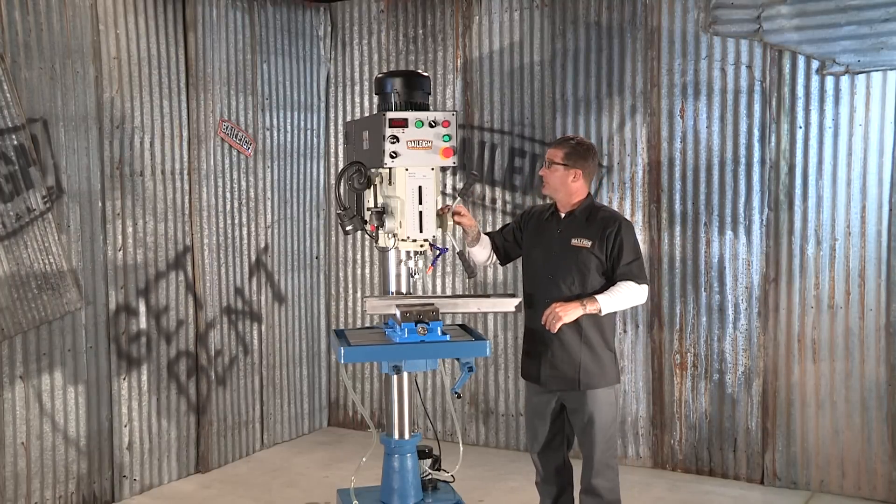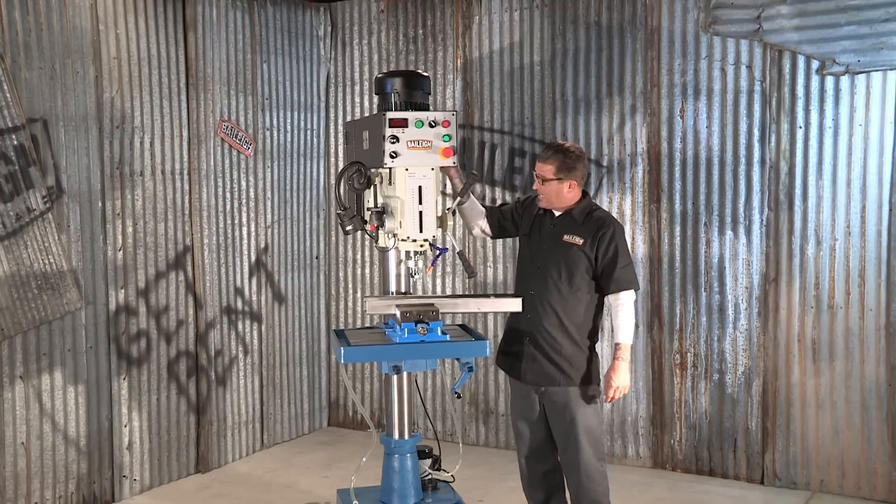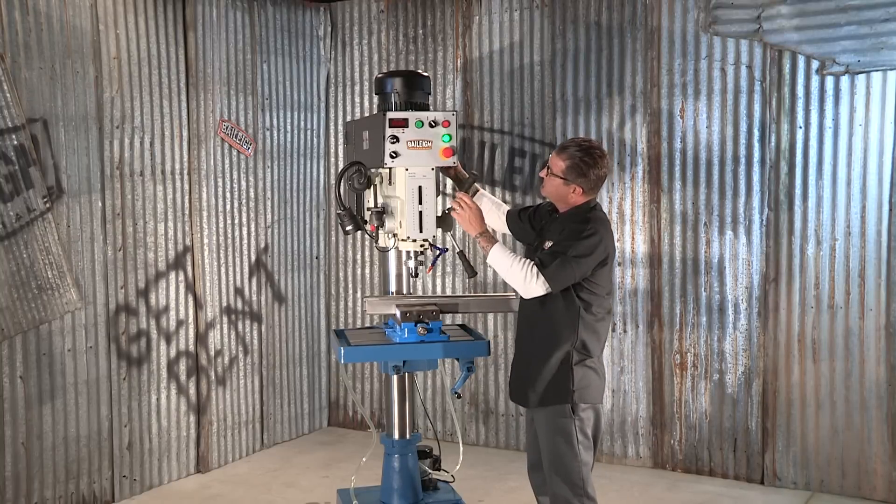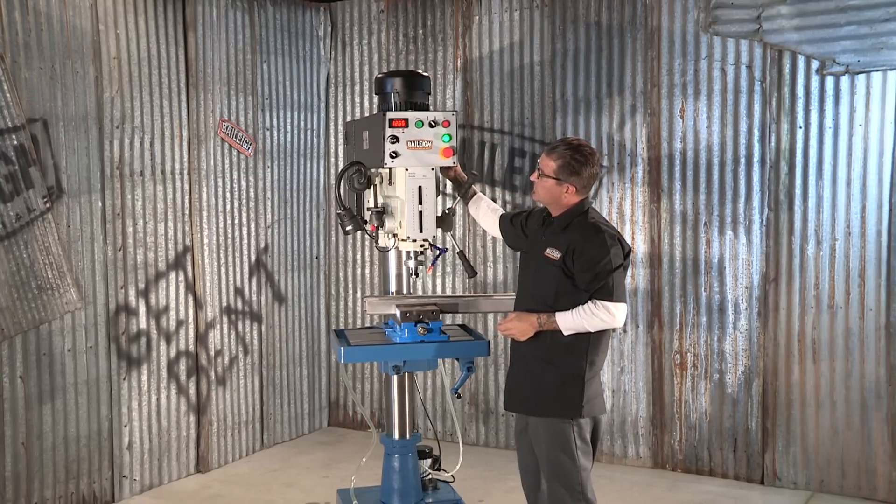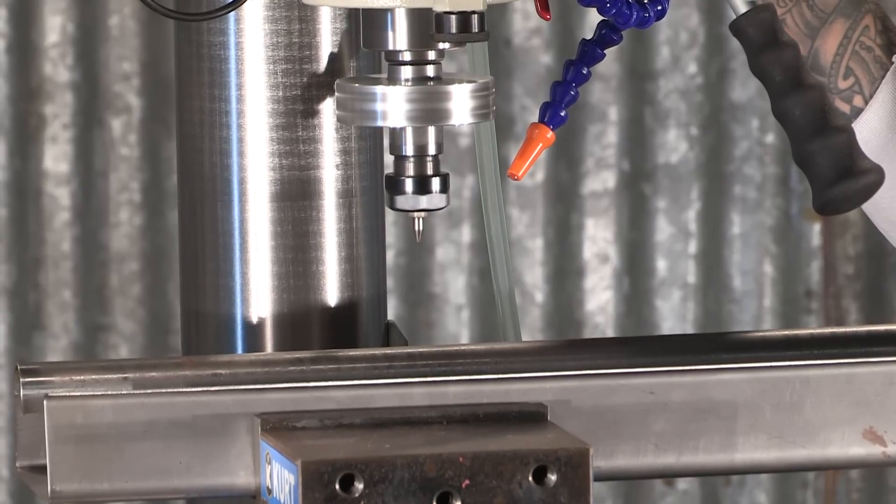What we're going to do now is we're going to turn it from low speed to high speed. We're going to start our machine. You can see we're spinning at a super high speed.